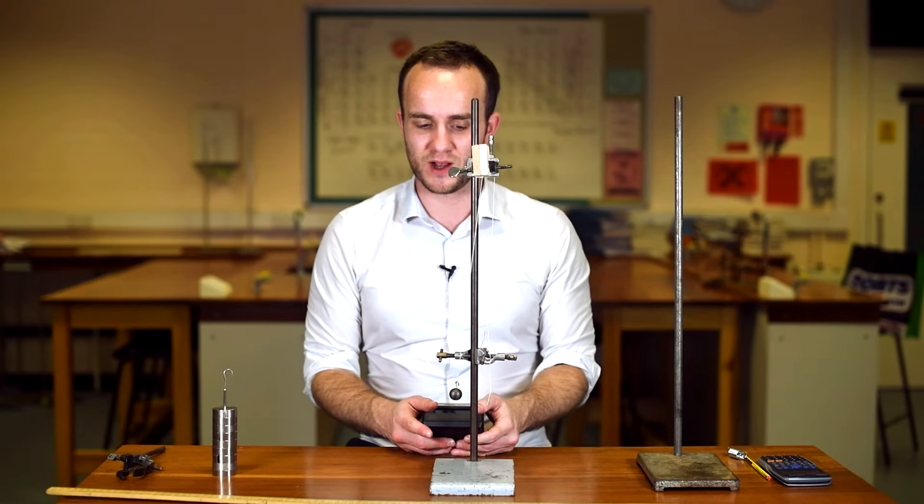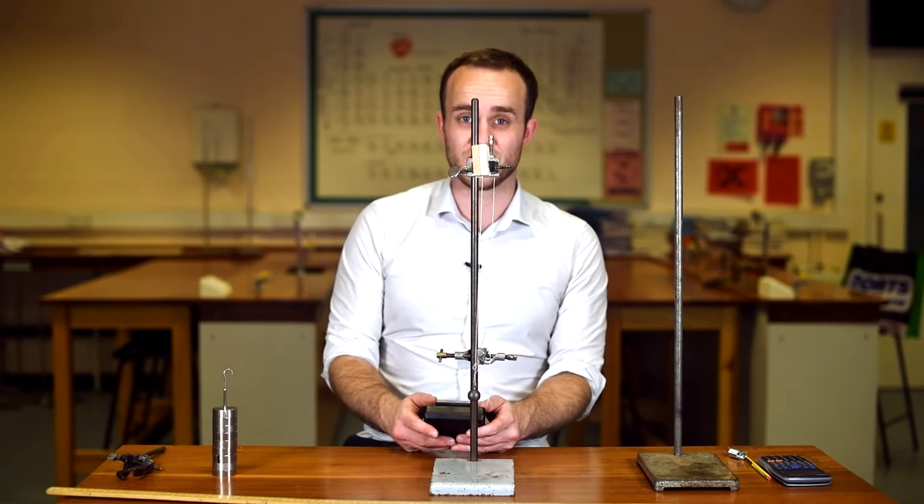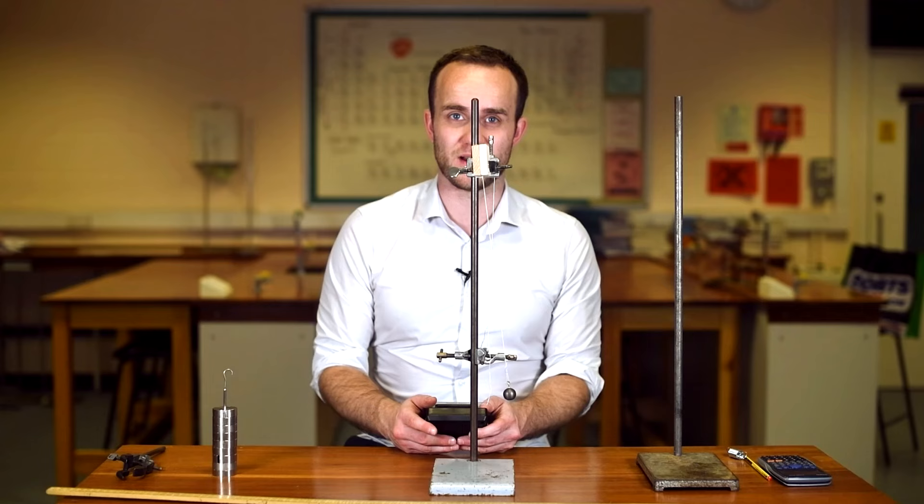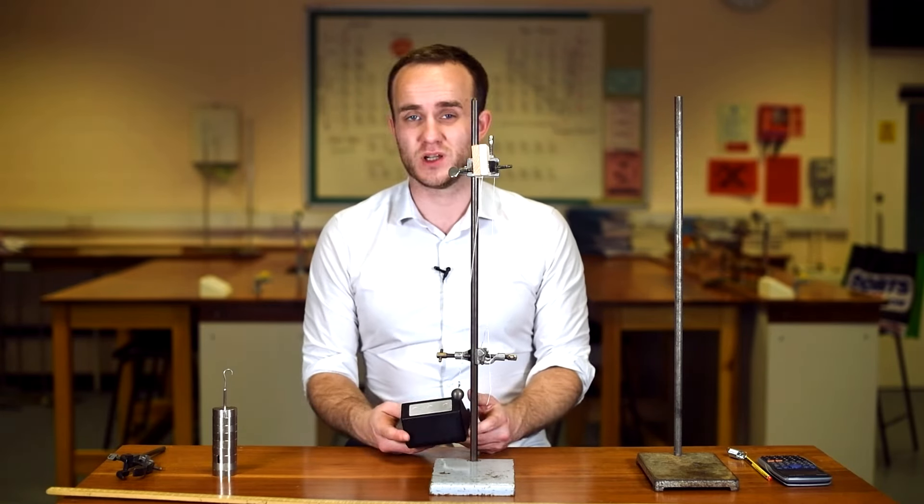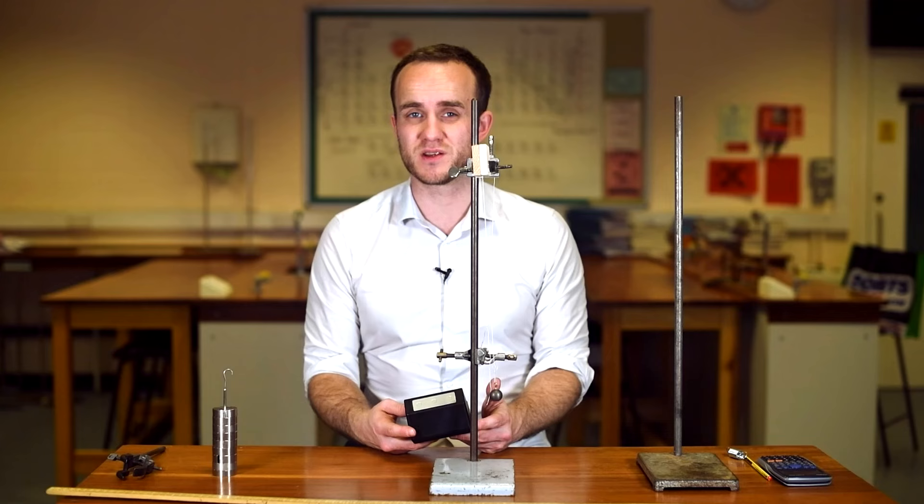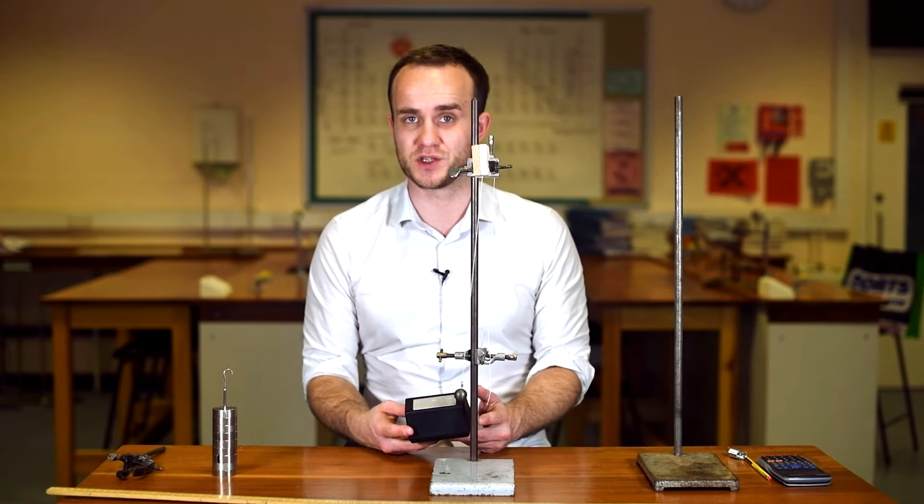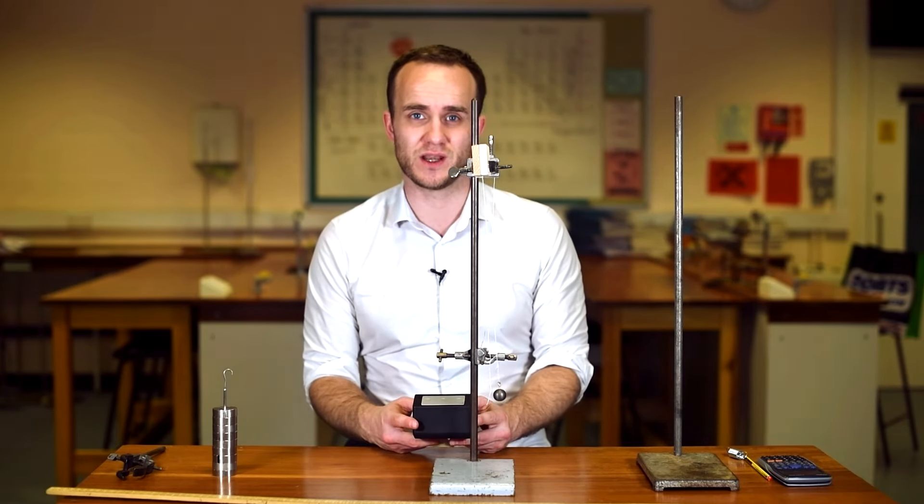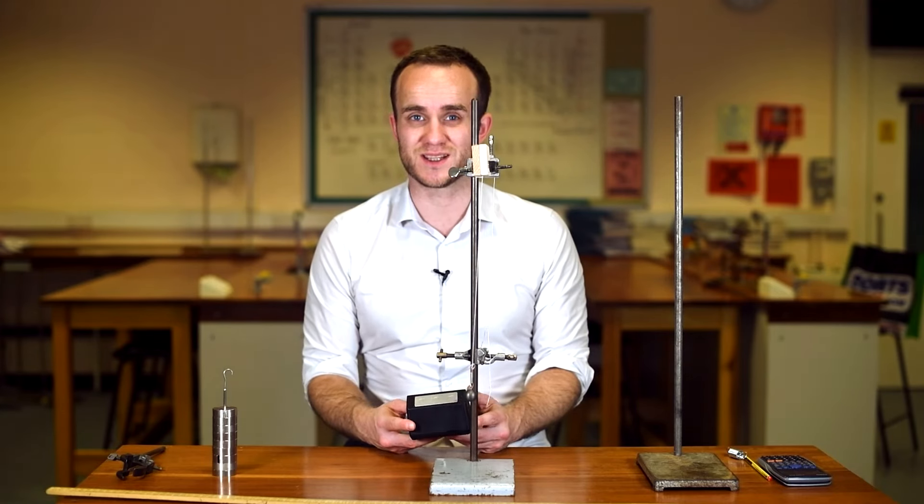So I'm going to start my stopcock when it passes equilibrium next, and obviously I would want to be at eye level with the fiducial marker if I was doing this for real. I could measure the time taken for one oscillation, but that's not going to be accurate. So I'm going to measure the time taken for 10 oscillations, then average it. Don't forget that when you start your stopcock, that's zero, and then you're counting one after that.